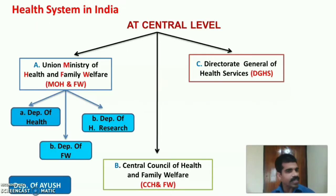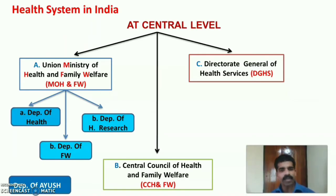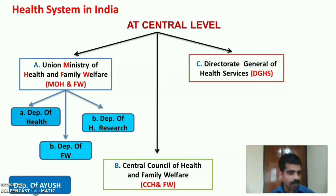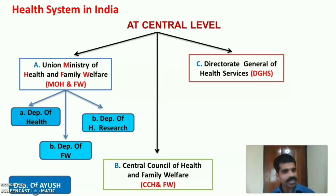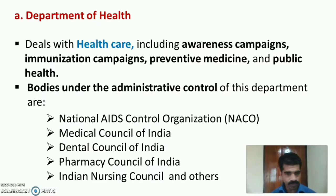The Ministry of Health and Family Welfare has three departments: the Department of Health, Department of Family Welfare, and Department of Research. Formerly, it also had a Department of AYUSH, but in 2014, AYUSH became a separate ministry.